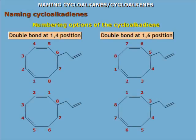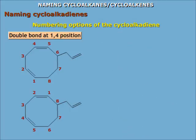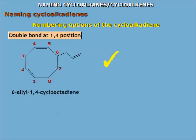Naming cycloalkadienes: the double bonds should get the lower locants, so it is a 1,4-diene rather than a 1,6-diene. After discarding invalid options, the correct one is chosen by the rule of first point of difference. Therefore, the IUPAC name is 6-allyl-1,4-cyclooctadiene.